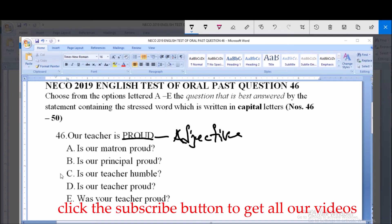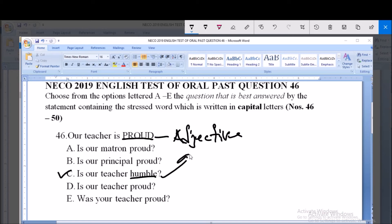The correct option here is option C. Because humble constructs proud. And as a matter of fact, both of them belong to the same grammatical class. Humble is an adjectival word, proud is an adjectival word.